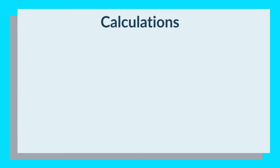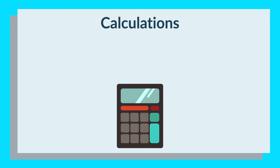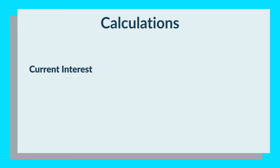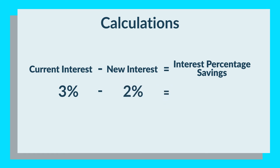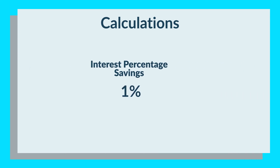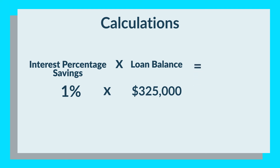We've given you an example, but let me show you how you can calculate your personal savings. All you need to do is subtract the new interest rate from your current interest rate to get your interest percentage savings. For example, 3% (old rate) minus 2% (new rate) equals 1% savings. Then take that 1% and multiply it by your loan balance. If your loan balance is $325,000, your savings for one year will be $3,250.